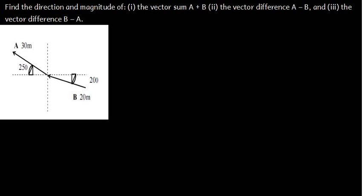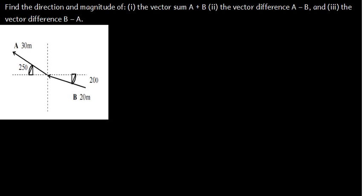In this tutorial we are going to talk about vectors and solve some practice questions. I believe you managed to watch the videos where we talked about how to find the resultant, how to add vectors, and how to get the angles. The question is asking us to find the direction and magnitude of: part A, the vector sum A plus B; part B, the vector difference A minus B; and part C, the vector difference B minus A.